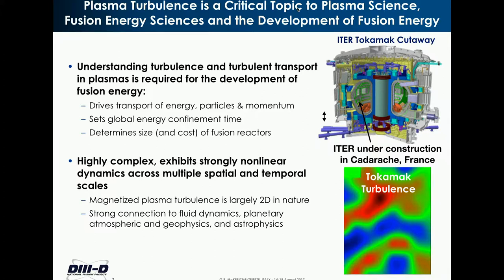More fundamentally, and perhaps of more interest to this community, the turbulence is a highly complex system. It exhibits strongly nonlinear dynamics across multiple spatial and temporal scales. The plasma turbulence is largely two-dimensional — not entirely, there are important 3D effects — but it can be described largely as two-dimensional in nature and therefore has strong connections to fluid dynamics, planetary, atmospheric, geophysics, and astrophysics.